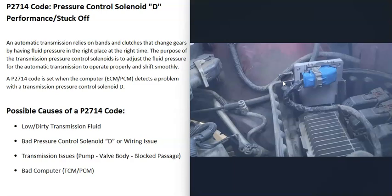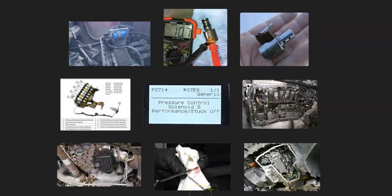That's basically it — a basic overview of how to go about fixing a vehicle with the P2714 code. If you have anything to add, please comment below. If you have any questions, ask and I'll try to answer them. If this video helped you, please click like and subscribe, and have a good day.